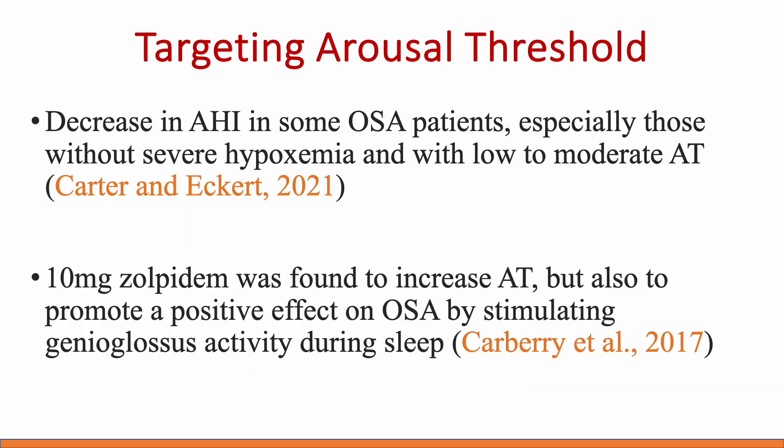The second system we can target involves the arousal threshold. Respiratory event-related arousals cause a lot of breathing instability, so any patient with a low arousal threshold will have more breathing instability — an important predictor of OSA severity. We can decrease AHI in some OSA patients, especially those without significant severe hypoxemia who have a low or moderate arousal threshold.